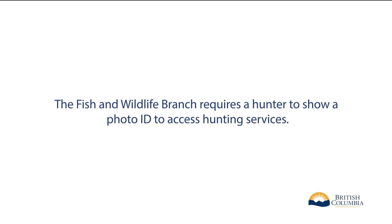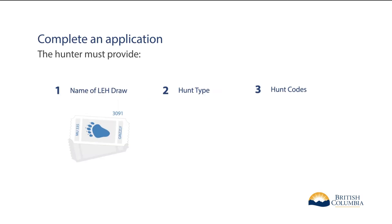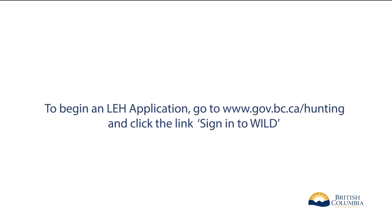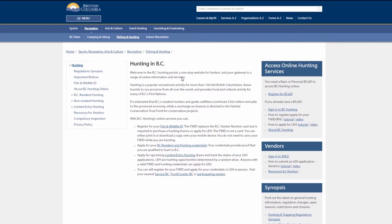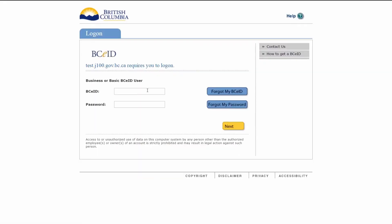The Fish and Wildlife branch requires a hunter to show a photo ID to access hunting services. To complete an LEH application for a hunter, the hunter must provide the name of the LEH draw, hunt type, and hunt codes. To begin an LEH application, go to www.gov.bc.ca/hunting and click the link. Sign into WILD and log in using your business BCEID.